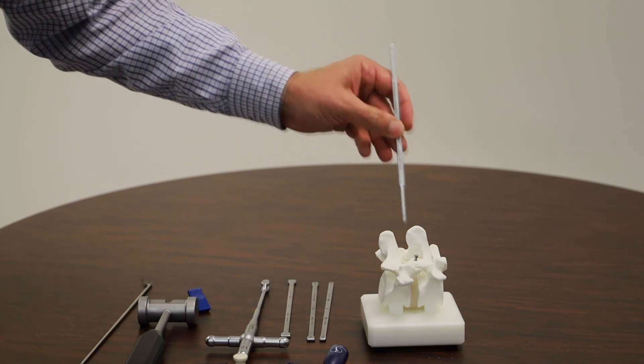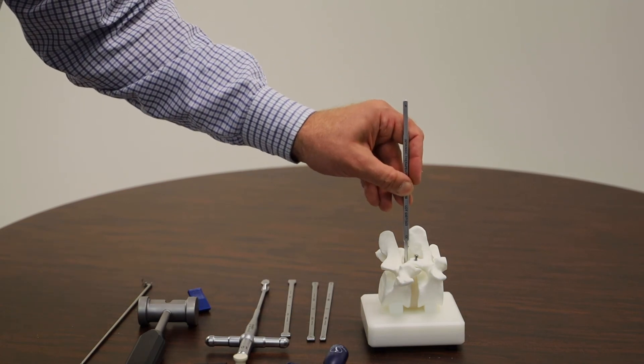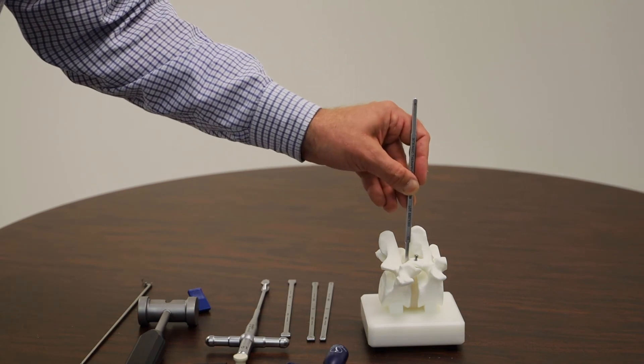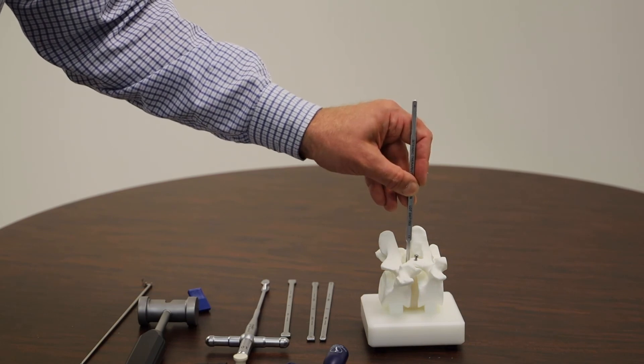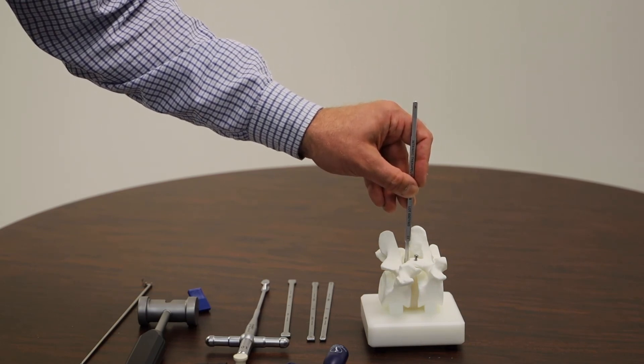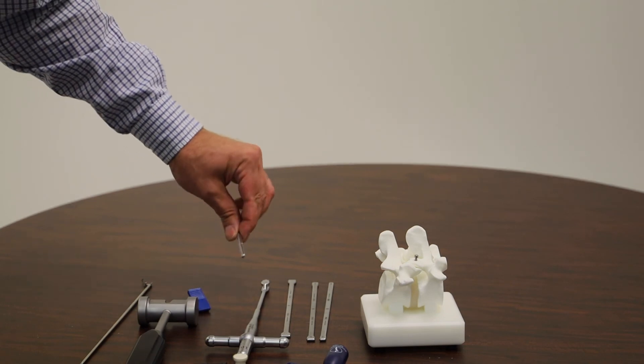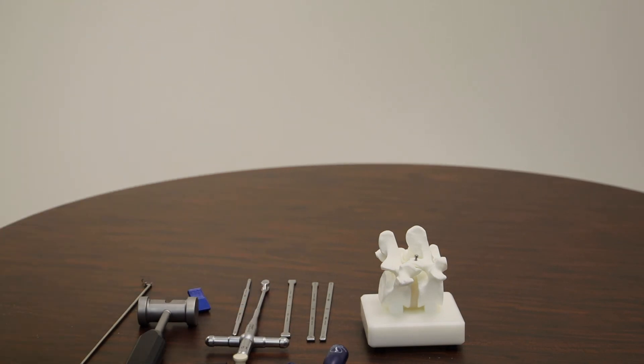It's good to run a tool across the back of the implanted vertebra to make sure that you cannot feel the anchor. Confirm that it is countersunk into the target vertebra. Take one final floral, check for any bleeding, and you're done.